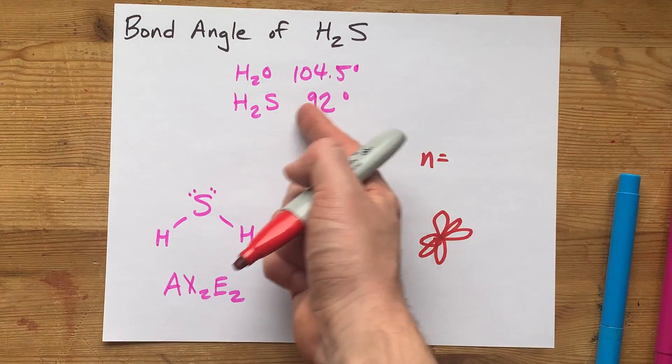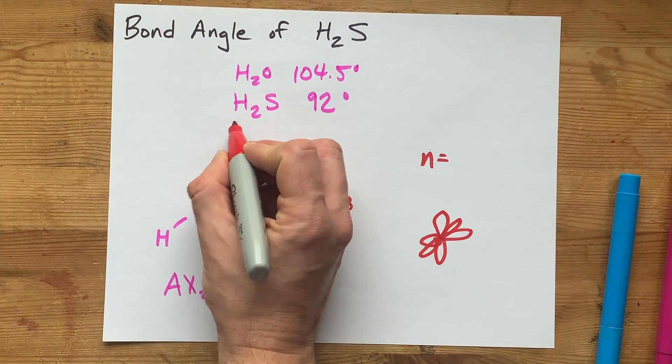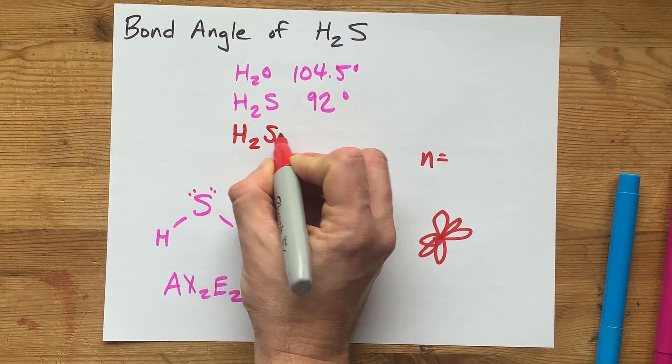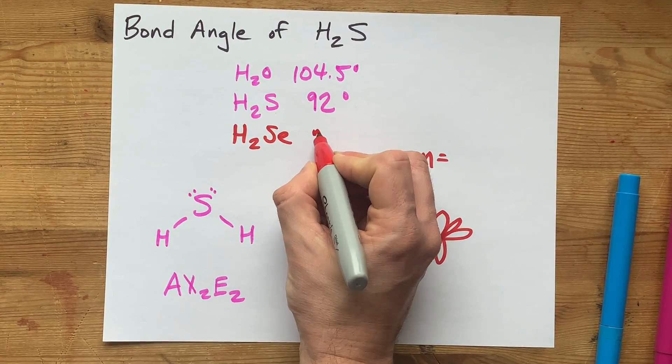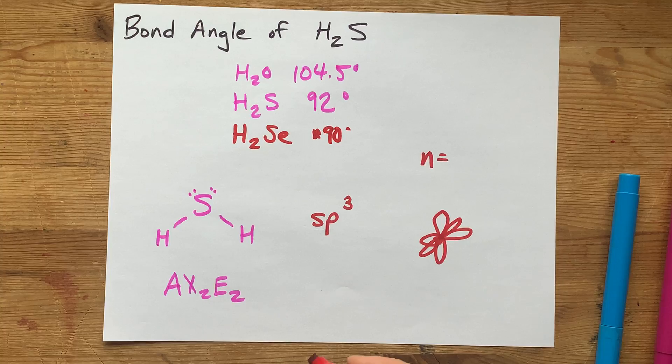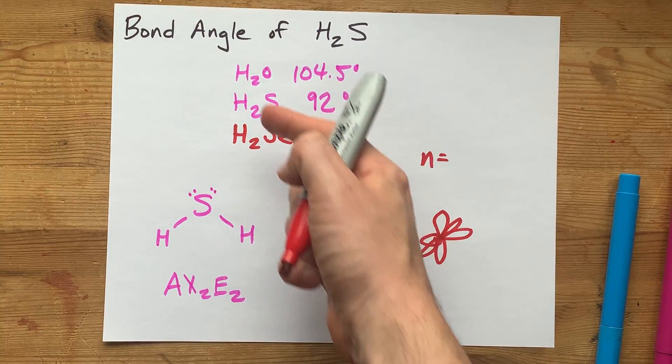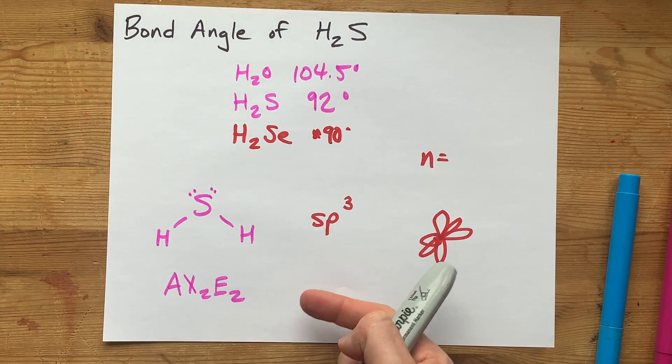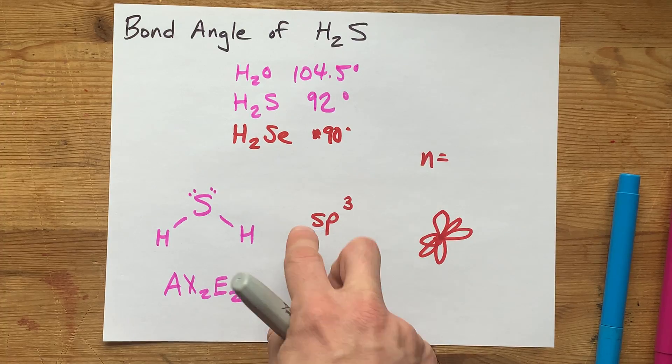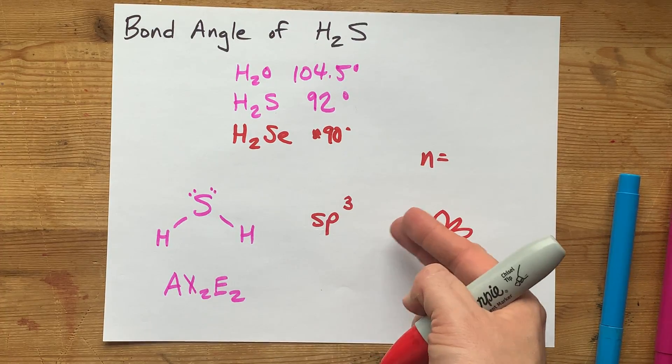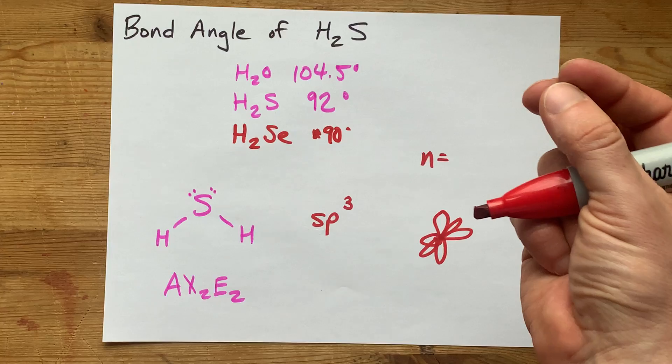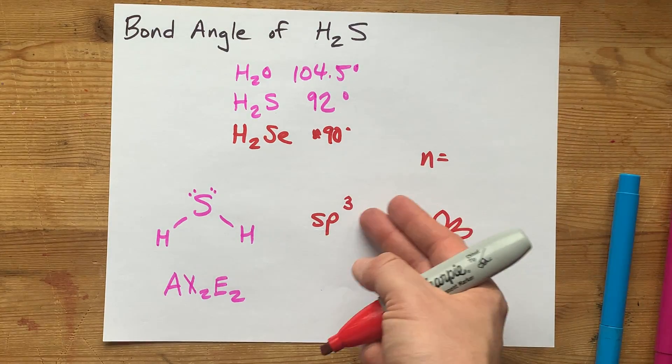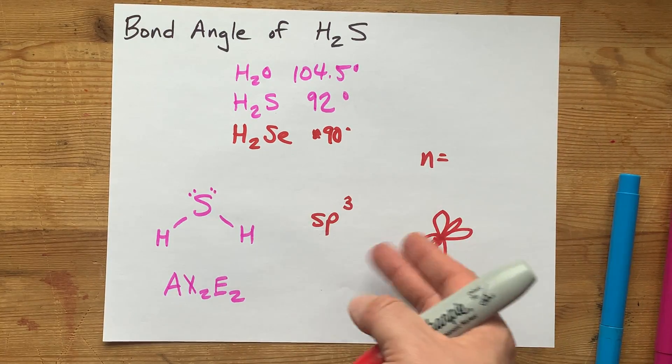That's how you can explain that H2S is 92 degrees. And I read one source that says for H2SE, it's actually about 90 degrees exactly because, again, the lower you go in the periodic table, the bigger the gaps are between the S and the P orbitals. And so they end up with more P character once they hybridize.